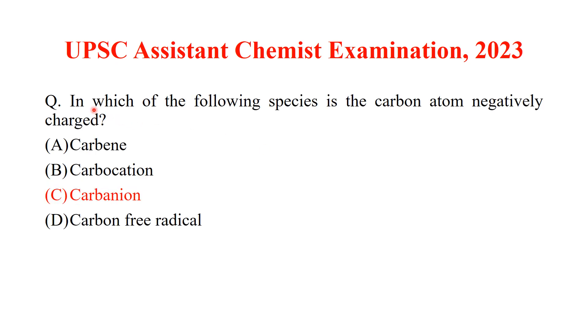In the question asking which species has a negatively charged carbon atom: a carbocation is positively charged, while a carbanion is negatively charged. So the answer is option C.